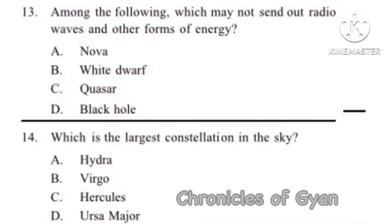Question 13: Among the following, which may not send out radio waves and other forms of energy? A black hole is a massive object whose gravitational field is so intense that even light — that is electromagnetic radiation — cannot escape from within its so-called event horizon. So a black hole may not send out radio waves and other forms of energy. Option D.